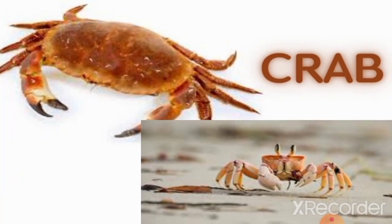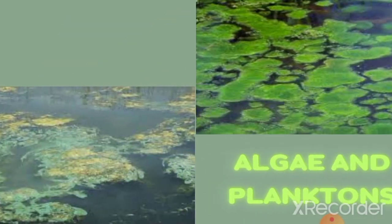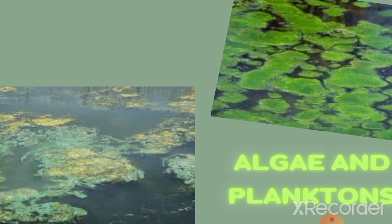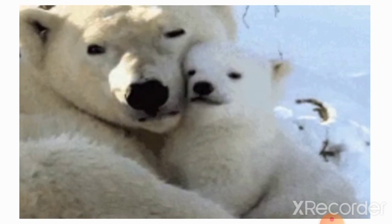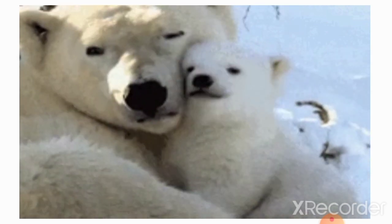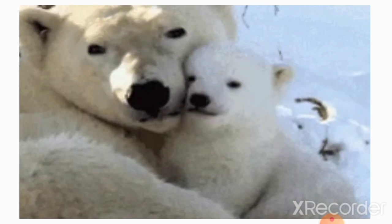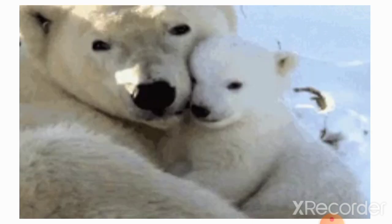Crustaceans — examples are the lobster, the shrimp, the prawns, the krill, as well as the crabs. The crabs in turn feed on plants such as the algae and the plankton. So we can see that each living thing is interconnected with one another. This means without the algae there will be no crab, without the crab there will be no fish, without the fishes there will be no seal.